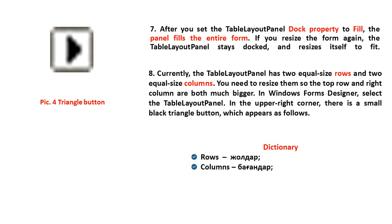Seventh step: after you set the Table Layout Panel Dock property to Fill, the panel fills the entire form. If you resize the form again, the Table Layout Panel stays docked and resizes itself to fill. Currently, the Table Layout Panel has two equal-sized rows and two equal-sized columns. You need to resize them so the top row and the right column are both much bigger.